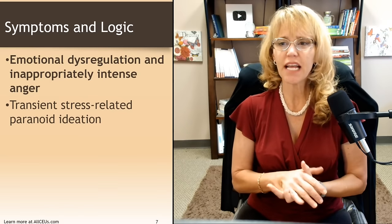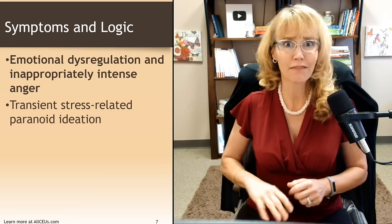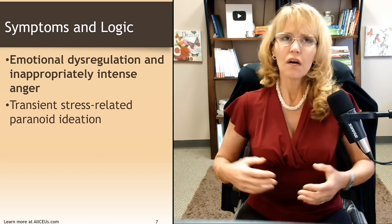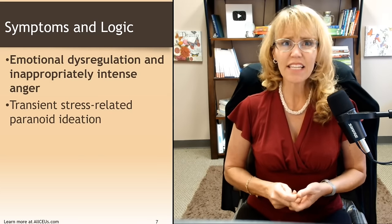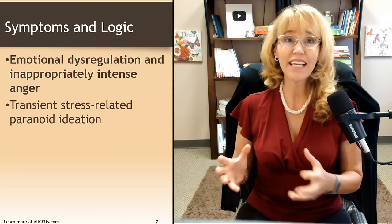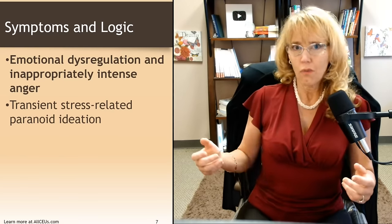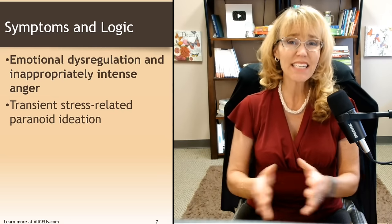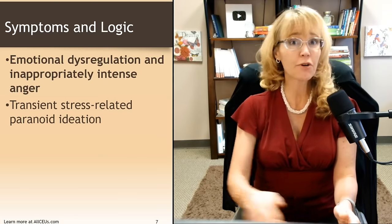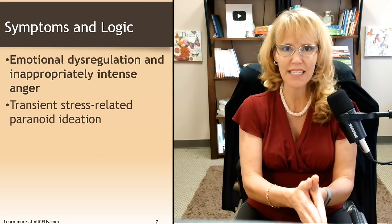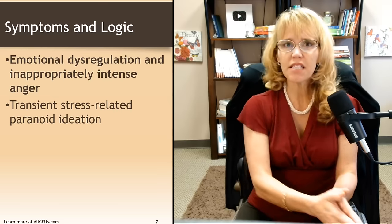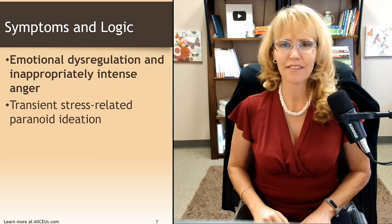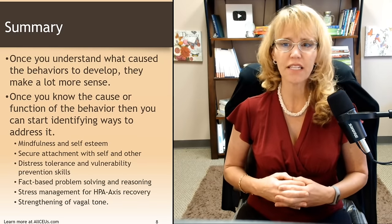They experience emotional dysregulation and inappropriately intense anger, which we've already discussed. And transient stress-related paranoid ideation — a flowery way of saying that when they get stressed, they start feeling like people may be out to get them or don't have their best interests at heart. Think about the environments they grew up in, and how people have reacted to them without understanding why this person is so incredibly intense. It makes sense — they start to expect the worst out of people.